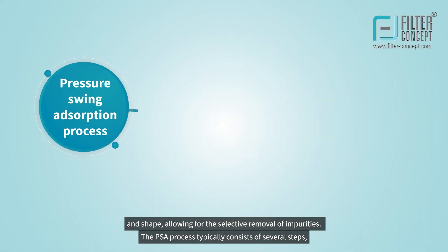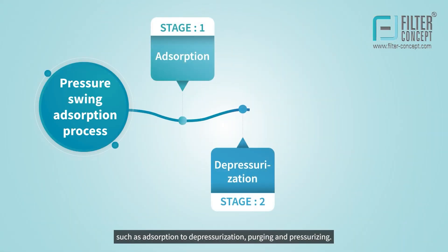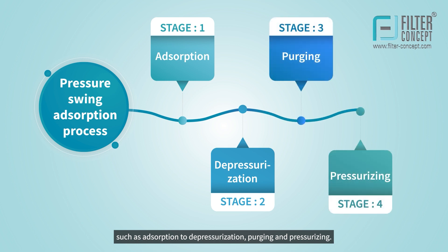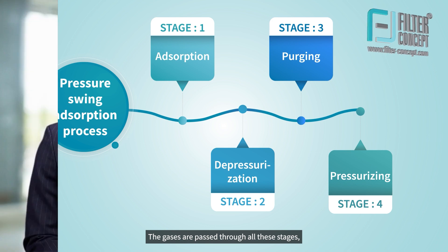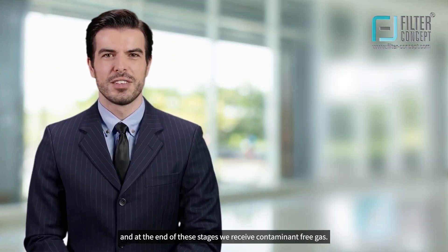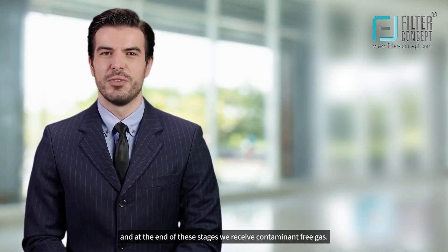The PSA process typically consists of several steps, such as adsorption, depressurization, purging, and pressurizing. The gases are passed through all these stages, and at the end of these stages we receive contaminant-free gas.